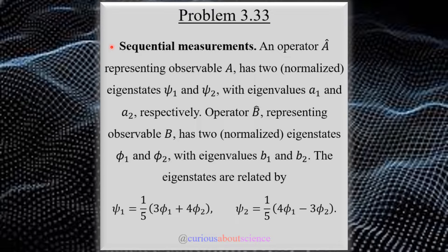So we have here an operator A hat represents the observable A, has two normalized eigenstates, psi 1 and psi 2, with eigenvalues A1 and A2, respectively.